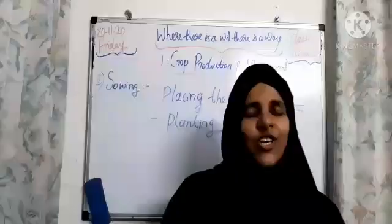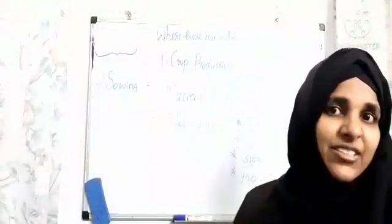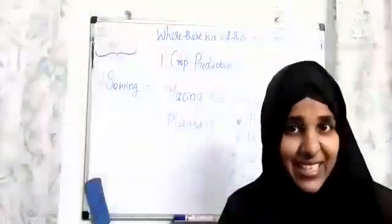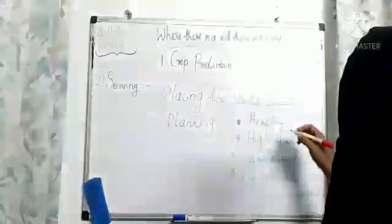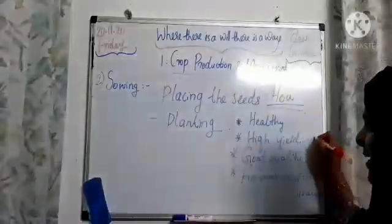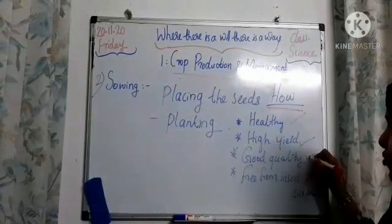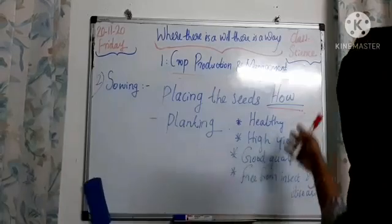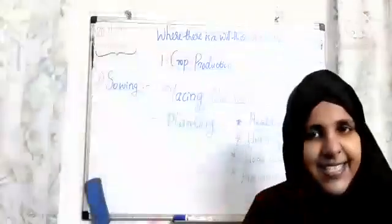This is a good method for separating healthy seeds from damaged ones. Healthy and good seeds settle down; damaged seeds float. You should do this activity at home. From this experiment we understand how to select seeds. The main criteria for selecting seeds are: seeds should be healthy, high-yield, good quality, and free from insects and diseases.